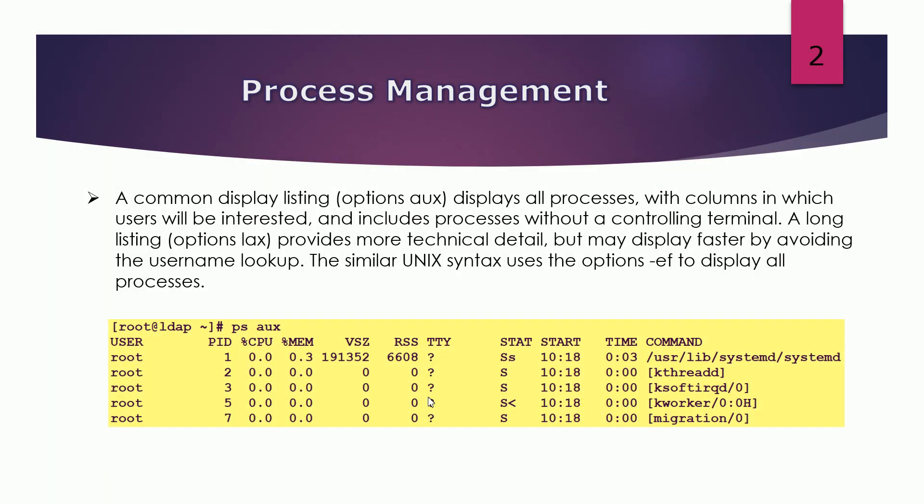The next is the common display listing option. This is the very common command PS -aux, which will display all the processes with columns that users will be interested in, and includes processes without a controlling terminal. PS -aux is similar to PS aux and the output is more understandable with long listing options. You can also use lax, which provides more technical details and the output is more or less the same as PS -ef output.